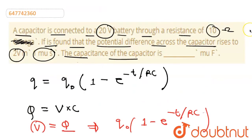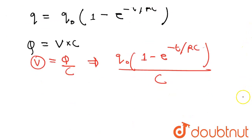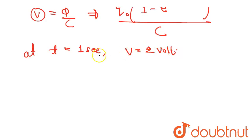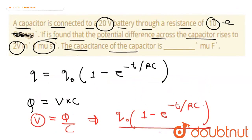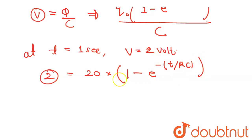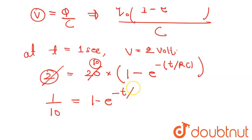Now, what is given in the question? At t equal to 1 microsecond, V is equal to 2 volts. So substituting: 2 is equal to 20 into 1 minus e raised to the power minus t over R into C. Cancelling, we get 1 over 10 is equal to 1 minus e raised to the power minus t over RC.